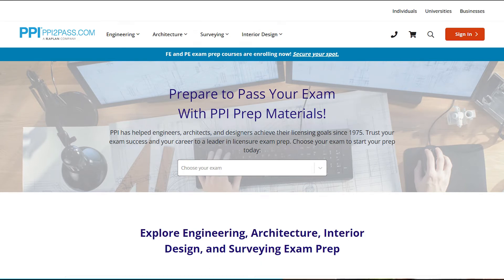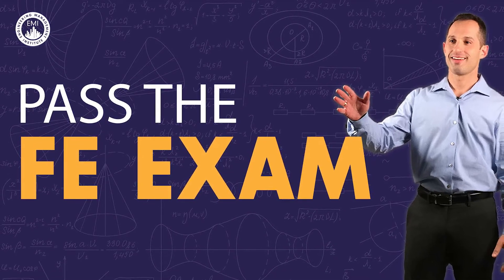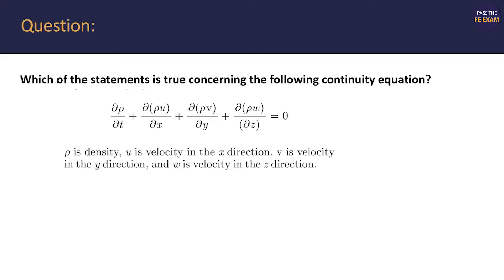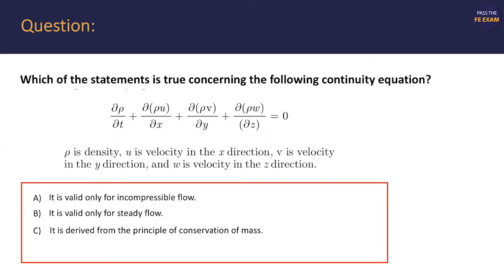Which of the statements is true considering the following continuity equation? A: it is valid only for incompressible flow. B: it is valid only for steady flow. C: it is derived from the principle of conservation of mass. D: it is derived from the principle of conservation of energy.